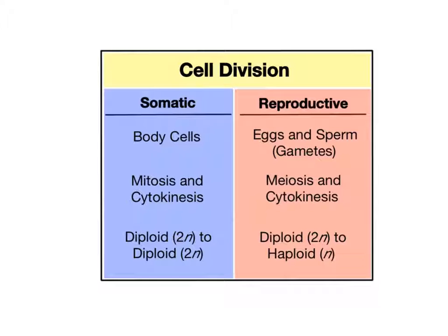Meiosis is a reduction division, where the number of chromosomes is reduced by half, and following this nuclear division, the entire cell divides into two separate cells through cytokinesis.